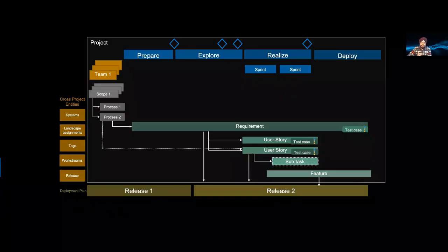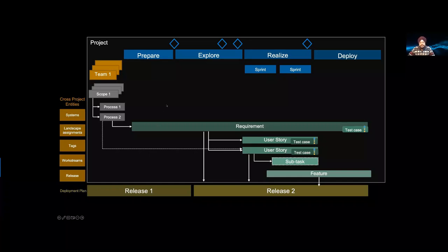Now let's get into this picture and really spend some time here, because maybe this is the only slide you need to understand to become an expert. Whatever you have is within a project box; outside the box you have cross-project entities, and each persona has a different role to play. SAP Cloud ALM is not just a collection of records — it's an active system that helps you navigate to a specific system in a specific UI, which is quite powerful. As a consultant or business process expert, you don't need to worry about finding the right tenant or URL — you just click seamlessly and you're in the right system.